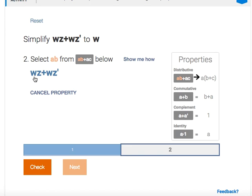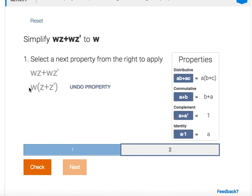And I want to select the ab part from this term here. So I'm going to select wz. And then I want to select the ac part. So that's going to be wz prime. I'm going to apply that. So it should factor out the w, which is the a up here. And it does. So now the w has been factored out.